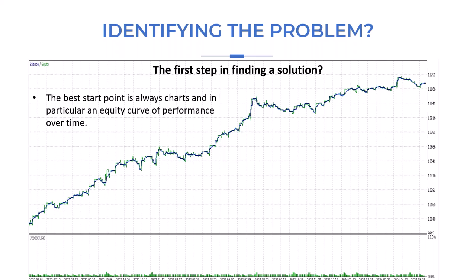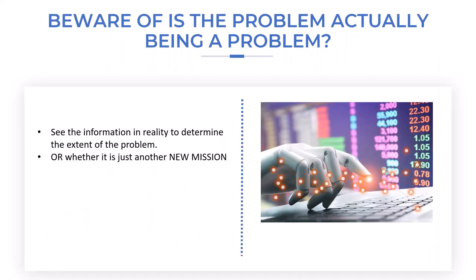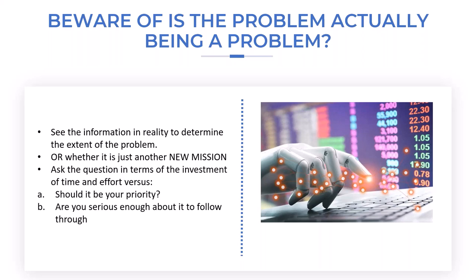The best starting point is always charts, and in particular equity curve performance over time. What we do is see the information reality to determine the extent of the problem. We want to stay away from things that aren't a big problem — we don't want to go chasing every funky thing that sounds interesting to look at.